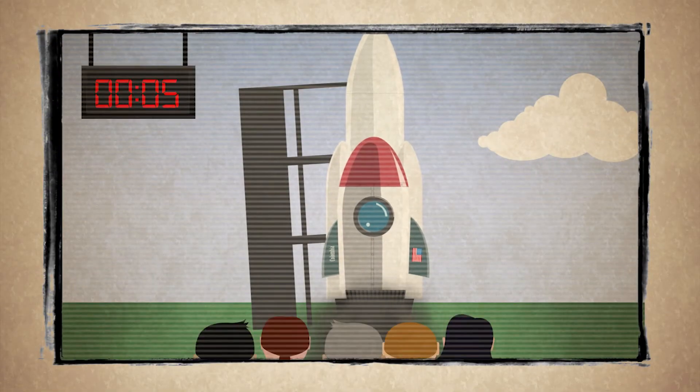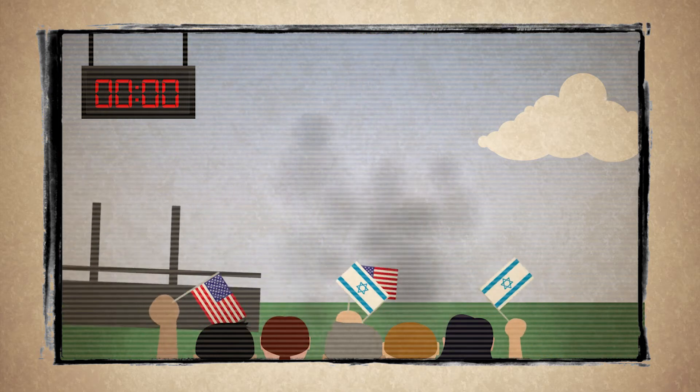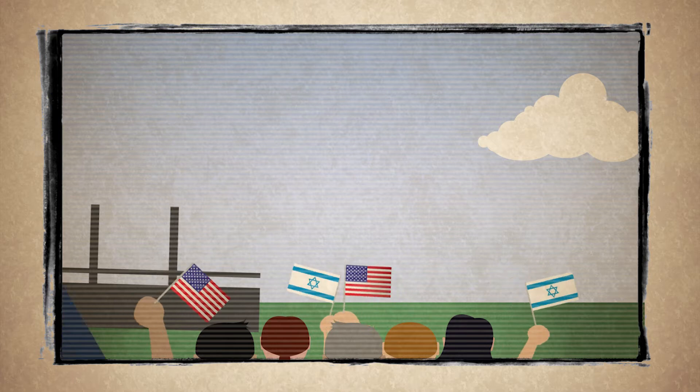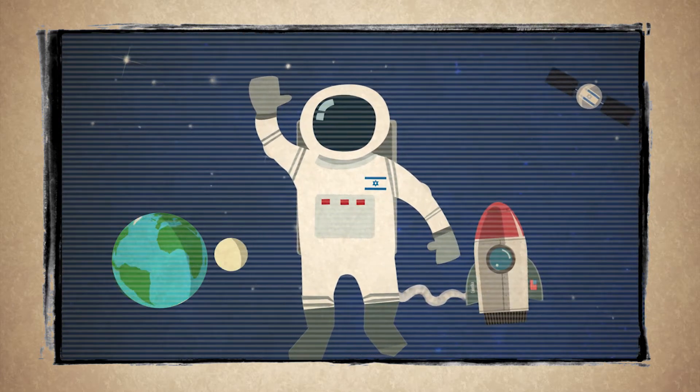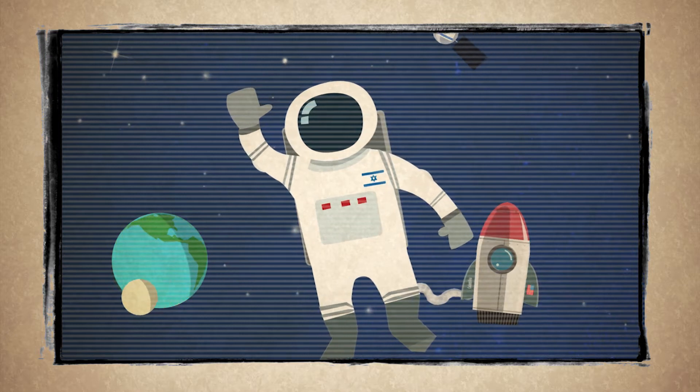In 1997, Colonel Ilan Ramon was chosen to be the first Israeli astronaut launched into space. He joined the Columbia Space Shuttle as a representative of the Israel Space Agency, and was responsible for a number of innovative scientific experiments in space.